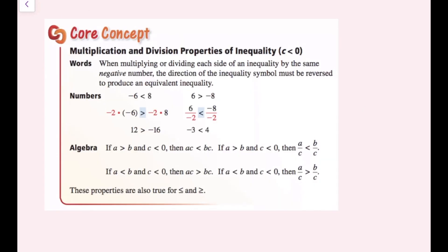When we multiply or divide by a negative number with inequalities, something different happens. When multiplying or dividing each side of an inequality by the same negative number, the direction of the inequality symbol must be reversed to produce an equivalent inequality. For example, negative 6 is less than 8. When we multiply by negative 2, I need to flip this symbol — so instead of less than, now I have greater than. Same thing dividing by negative 2: I have to flip the symbol as well.